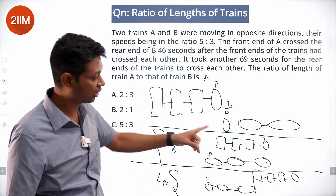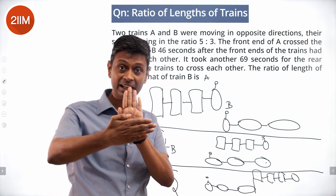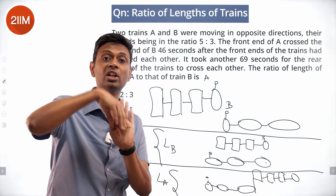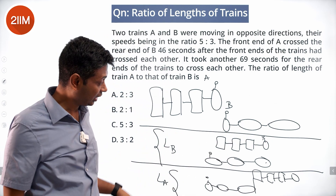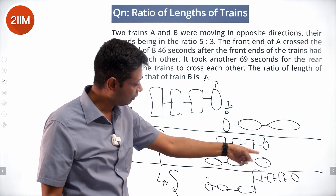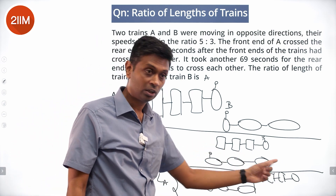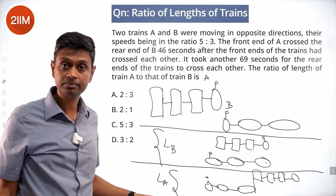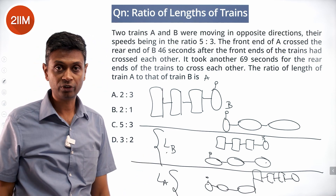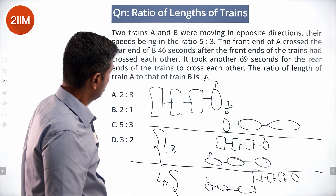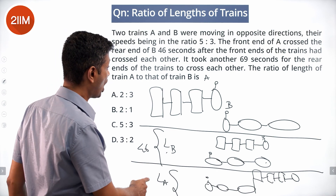From here to here — front-to-front and then front-to-back — train A is at the beginning of train B and goes all the way to the end of train B. Relative distance: beginning to end is length of train B. Then from front-to-back, the back goes all the way, so the distance traveled is length of train A. So the relative distance in the first phase is length of train B, and in the second phase is length of train A. The first phase takes 46 seconds; the second phase takes another 69 seconds.